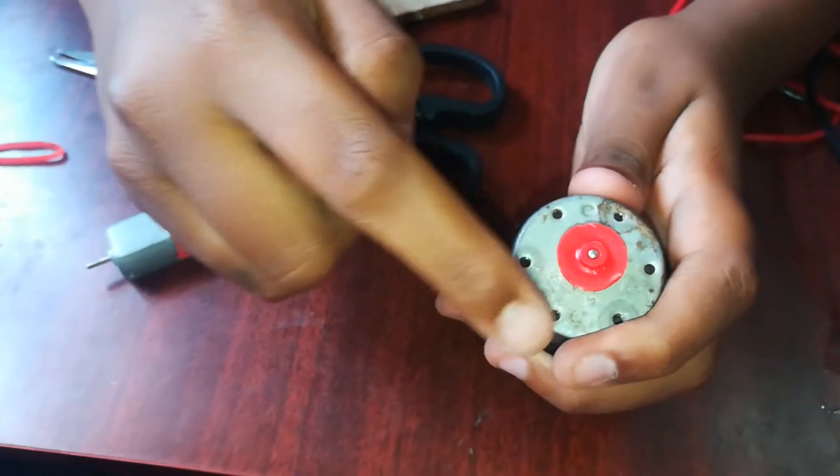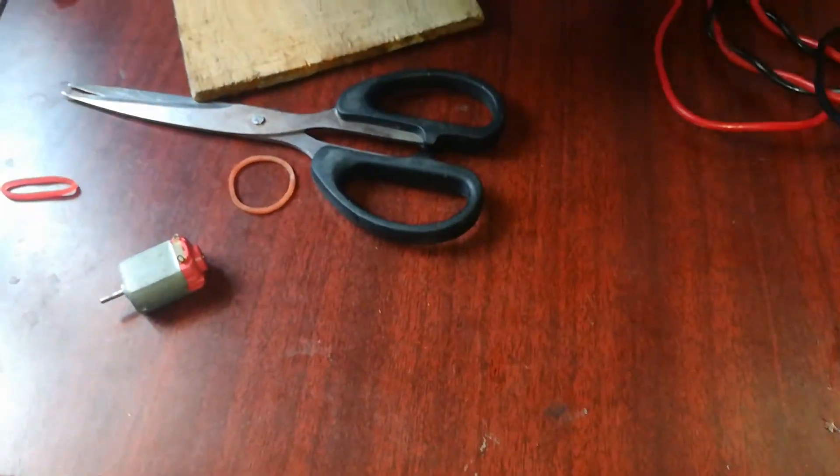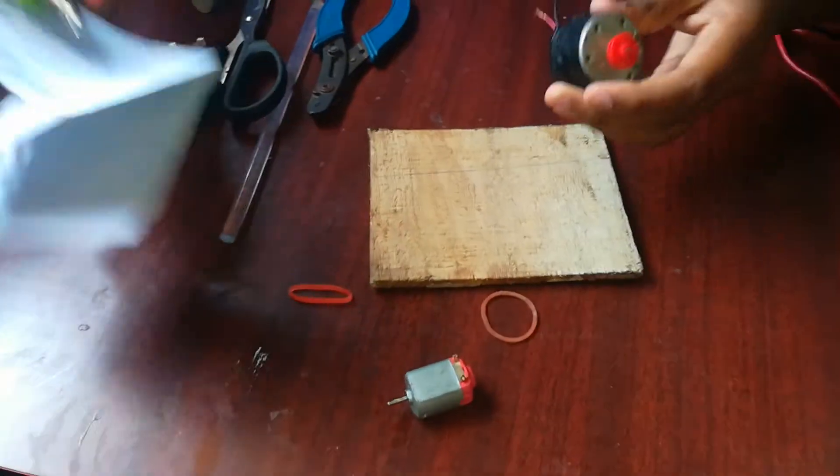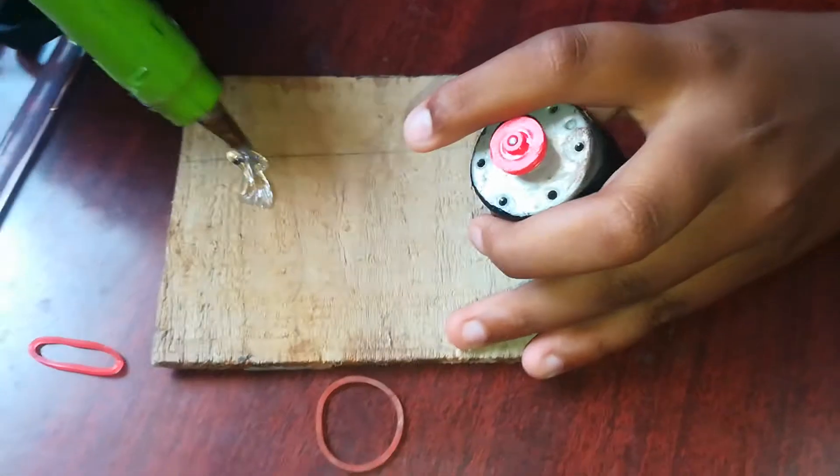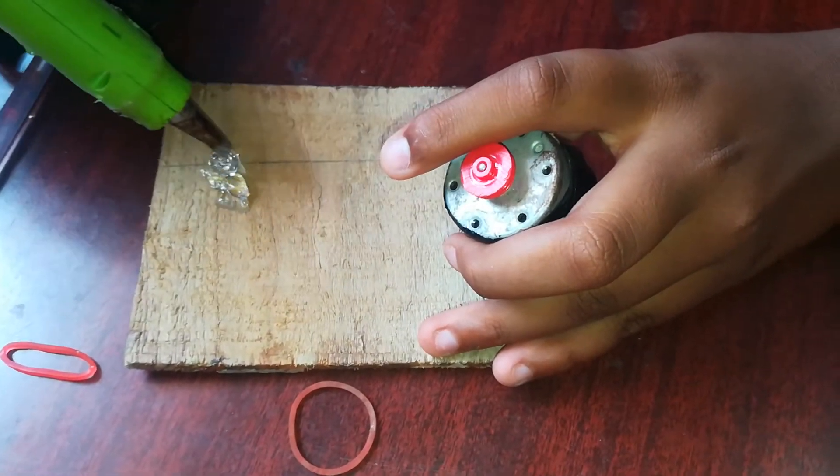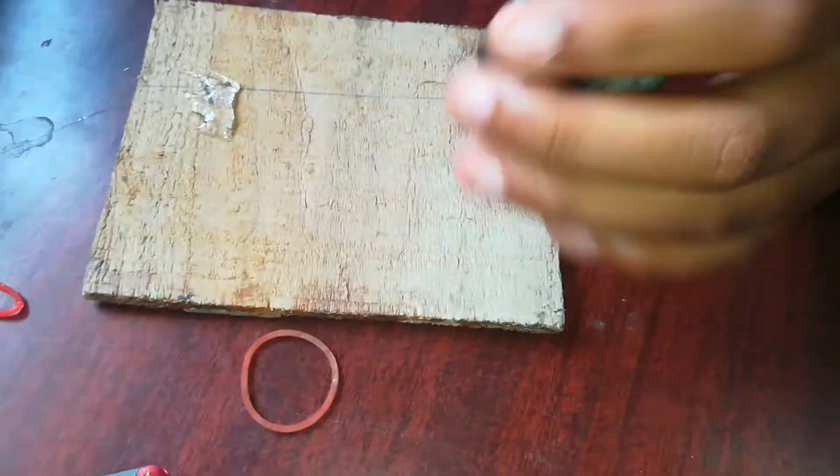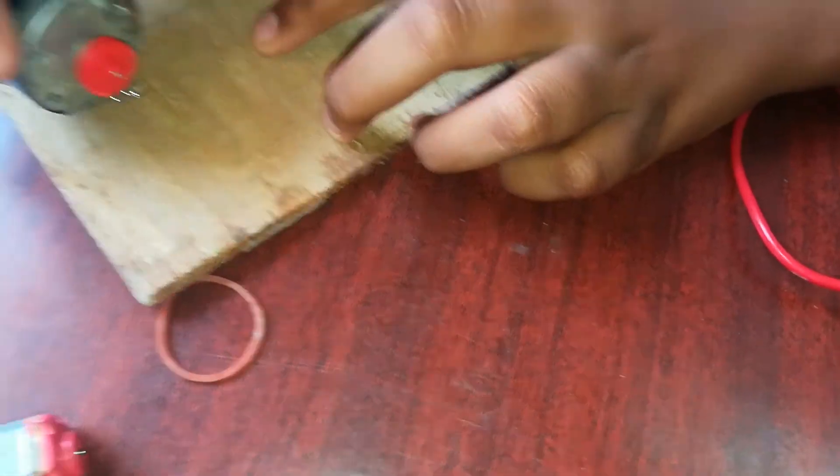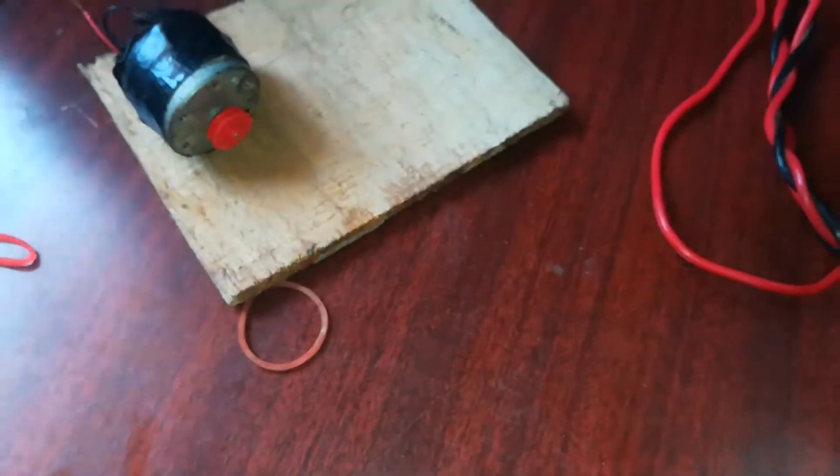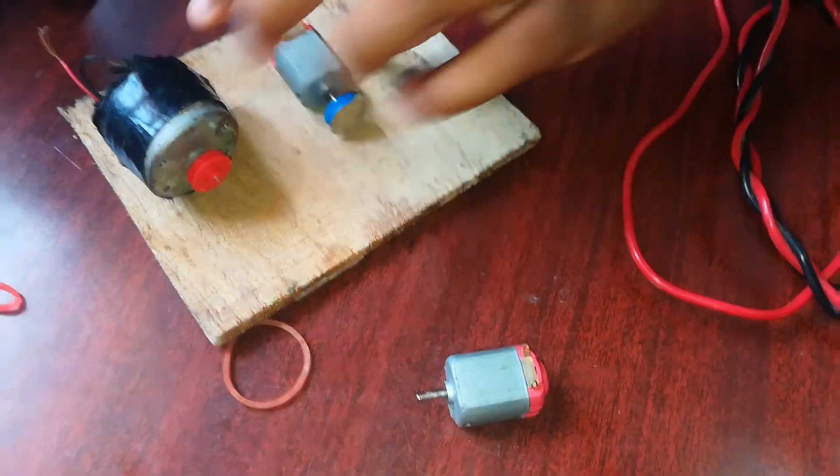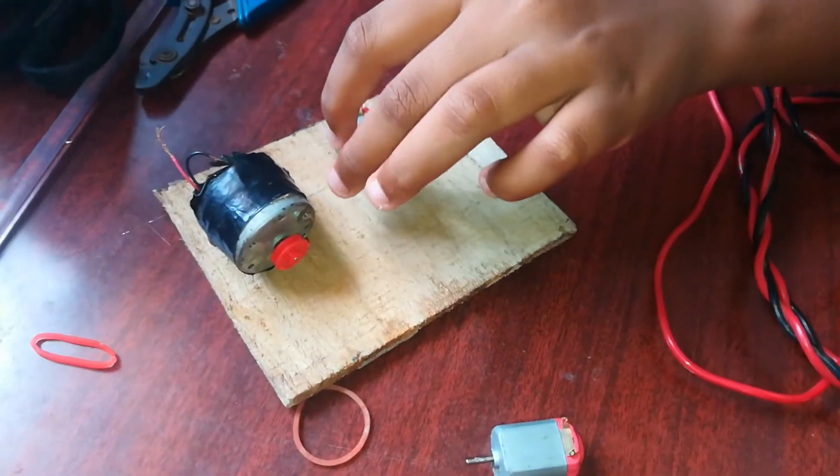We have a T-wheel. I will fix this. I will fix this motor. Next, we will fix this motor. Once we have the motor, then we fix the other motor.